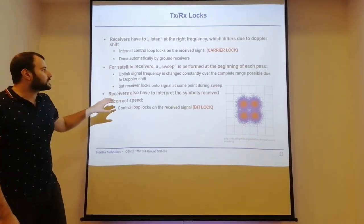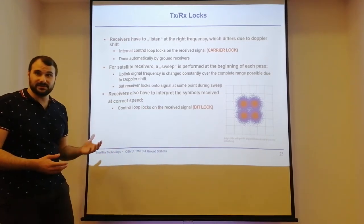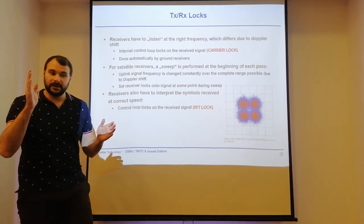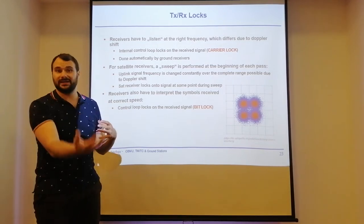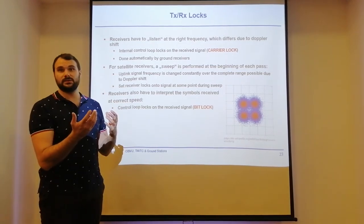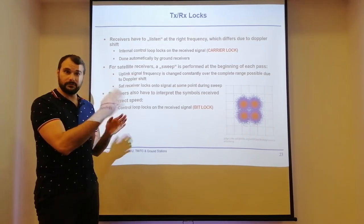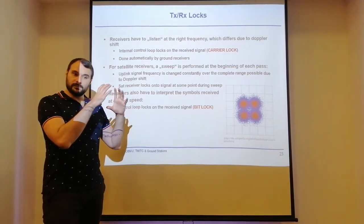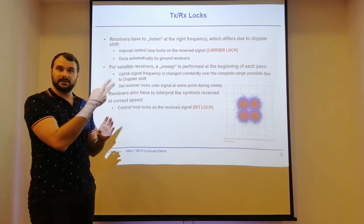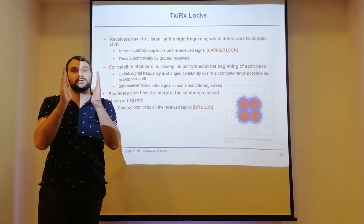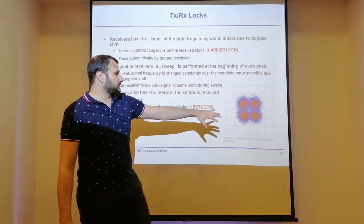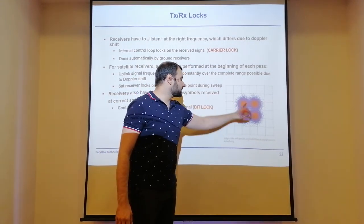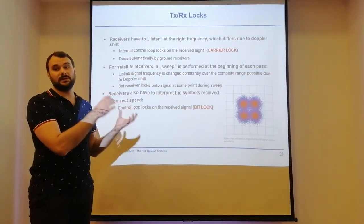Receivers must also interpret the received symbols at the correct speed—this is the lock onto the data rate or symbol rate. Since our signal includes modulated data, we need to know the data rate—how often frequency or phase shifts occur. You use a synchronization sequence with many shifts to detect the beginning and end of each bit duration. This is the bit lock. With QPSK, having four states, once bit lock is acquired we can interpret individual bits.